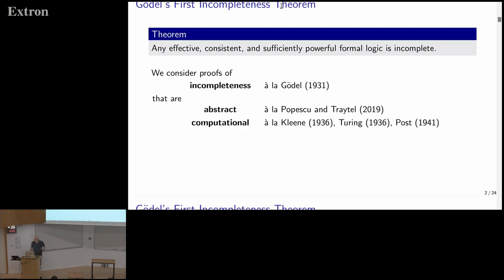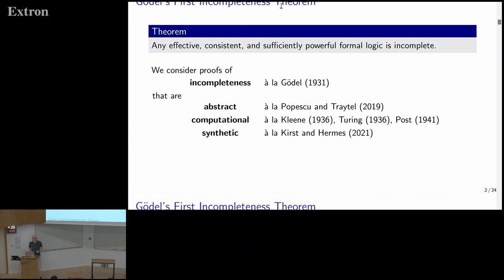We're going to use a different proof approach than Gödel's original. There's a very well-known proof of incompleteness that uses the halting problem, taught in many basic computer science courses, that essentially relies on the undecidability of the halting problem. It was discovered independently by Kleene, Turing, and Post.